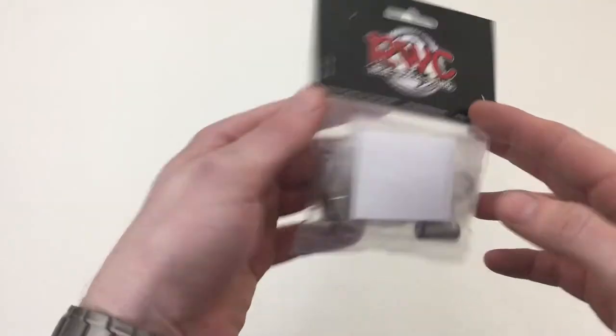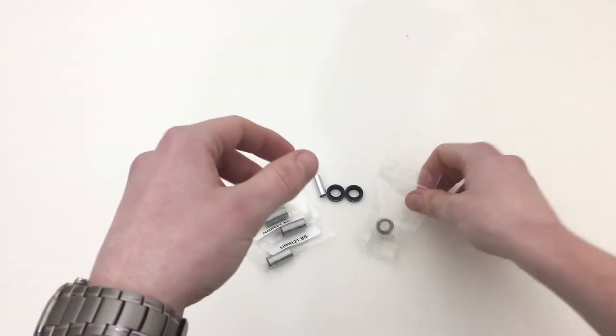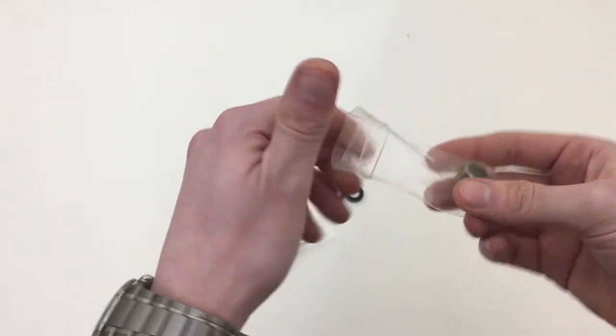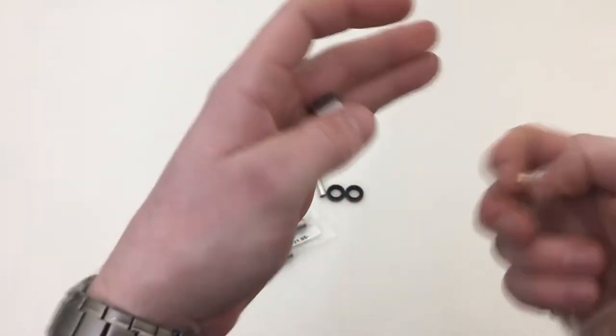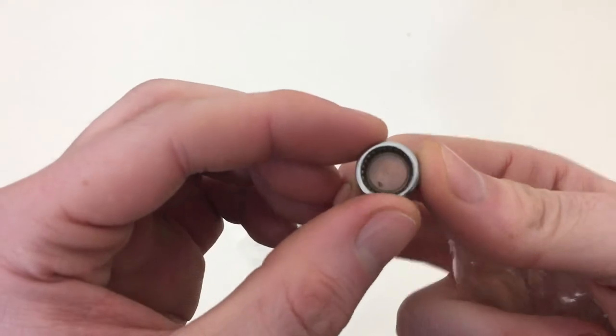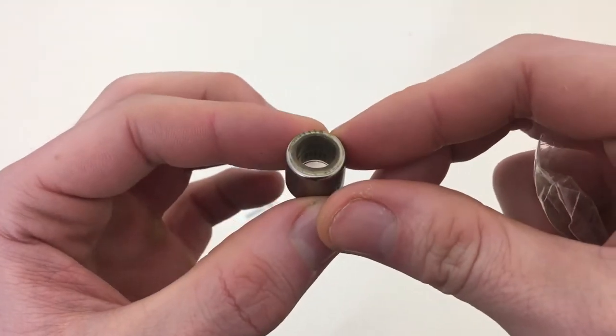Let's get inside this kit. We'll start with the needle bearing itself. It comes with this little plastic cup which holds the bearings in place until it's actually installed.